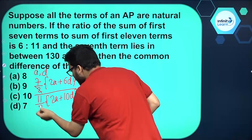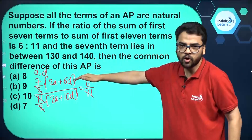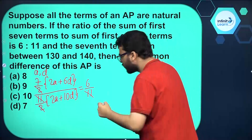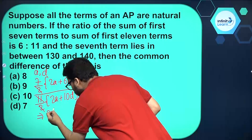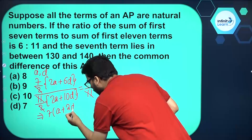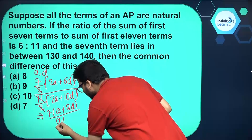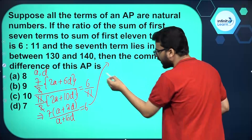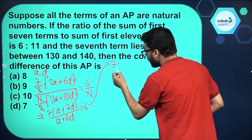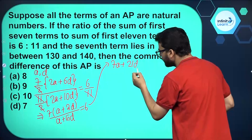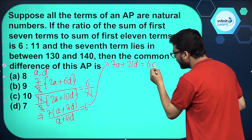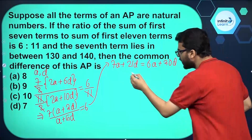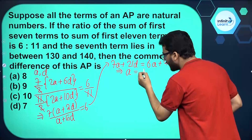We can cancel common values — taking 2 common in the numerator and denominator and cancelling the factor of 2. So we get 7(a + 3d) in the numerator and (a + 5d) in the denominator, equal to 6. Cross-multiplying and simplifying: 7a + 21d = 6a + 30d, which further simplifies to a = 9d.